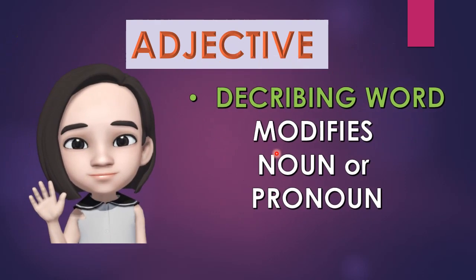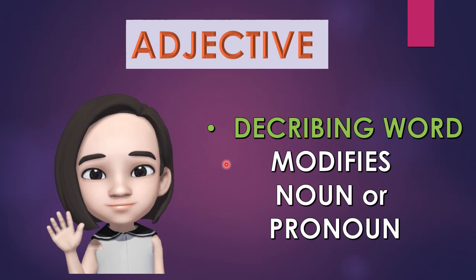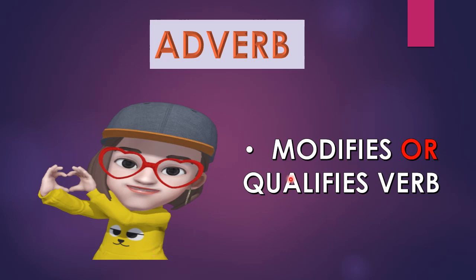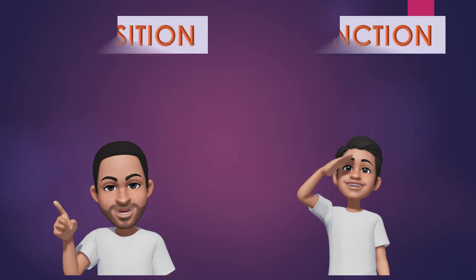The two daughters are Adjective and Adverb. Adjective loves her father and brother very much and keeps on praising them — she always describes the noun and pronoun. So adjective is a describing word that describes a noun or a pronoun. Adverb, unlike adjective, loves her mother very much and always modifies her when needed. So adverb is a word that modifies or qualifies a verb.